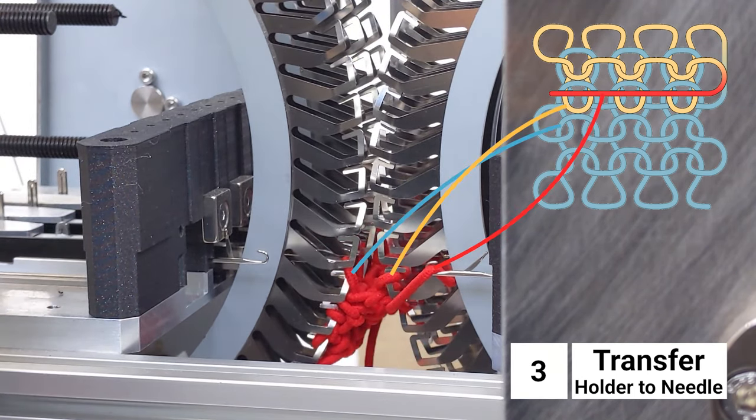At this point in the process, the retaining needles hold the new yarn, the red yarn in the diagram. The right holders hold the yellow loops, the previous row of the current layer. And the left needles have the blue loops, the loops from the previous layer. Now the machine will pull the red yarn through both the yellow and the blue loops.